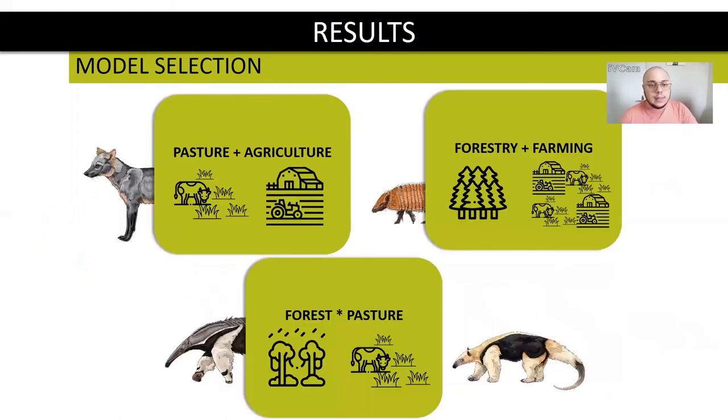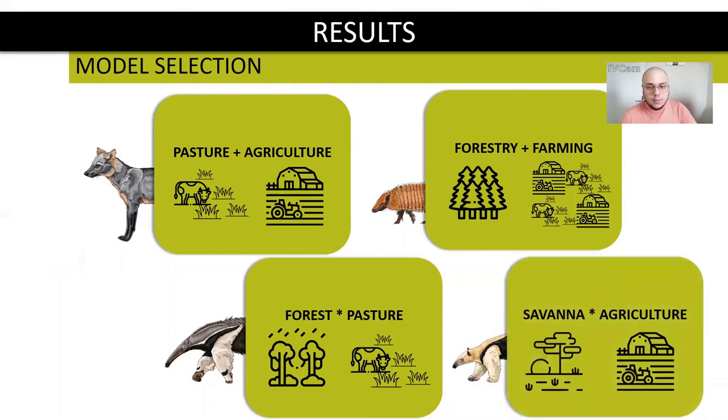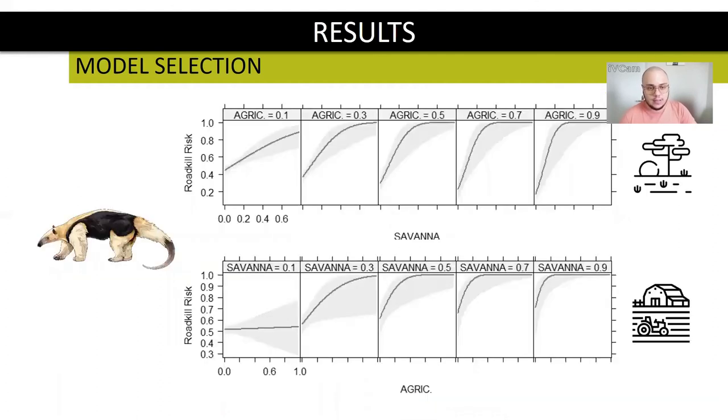For the Tamandua tetradactyla, we also have an interaction between a habitat and a matrix, with savanna and agriculture interacting between them. In both cases, one variable interacts with another, accelerating the effect of the roadkill risk. This species inhabits lots of environments but has arboreal habits. When we have just savanna or mosaic with agriculture, without canopy formation, probably the animal moves more by the ground, what can increase the roadkill risk.